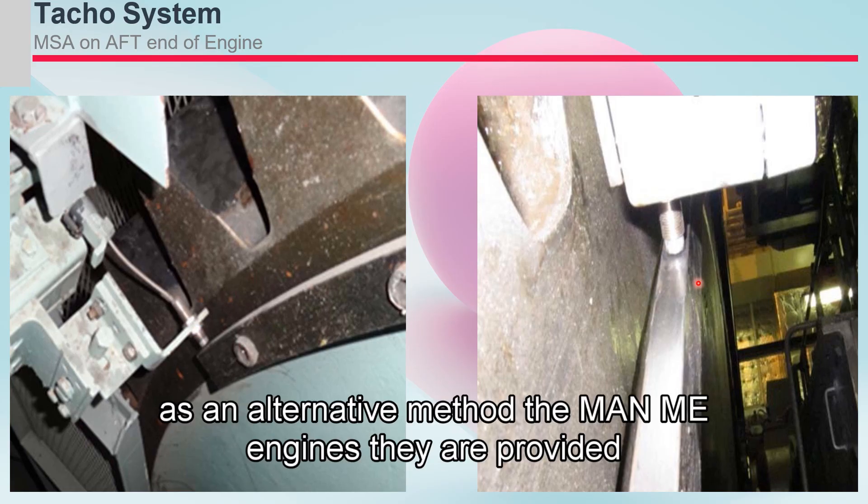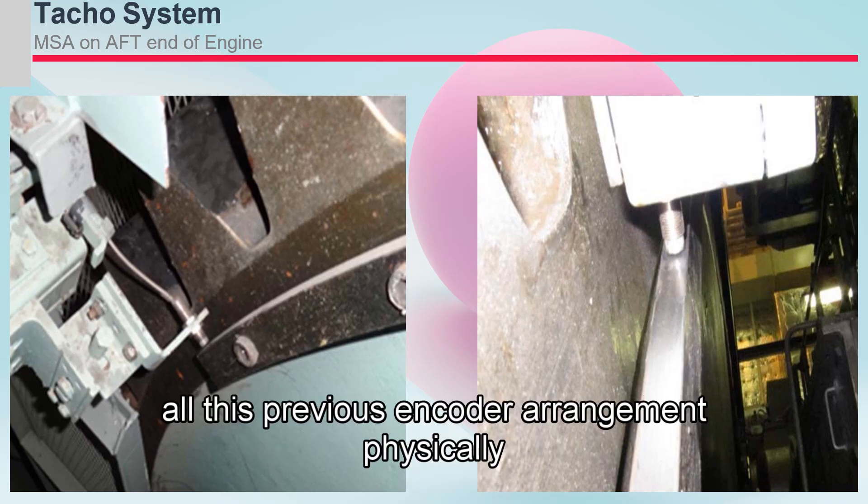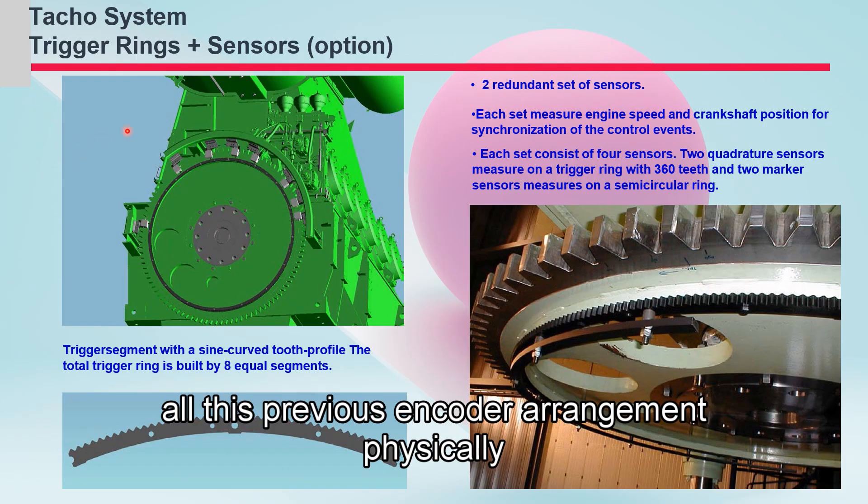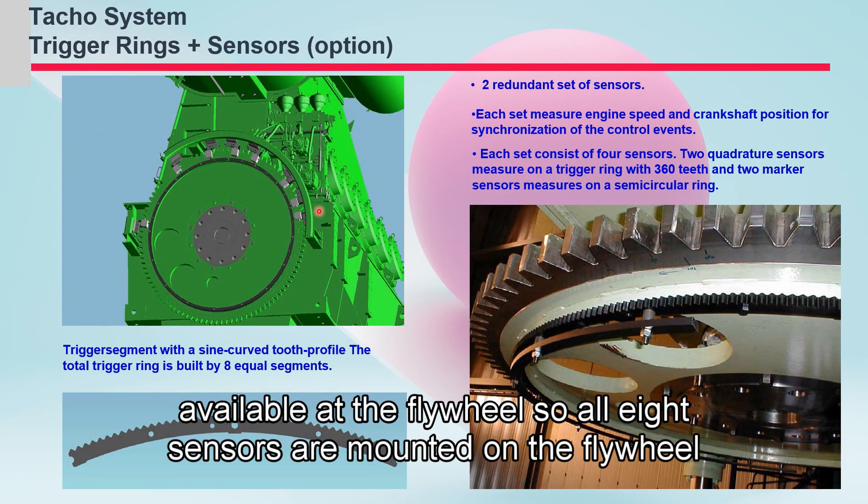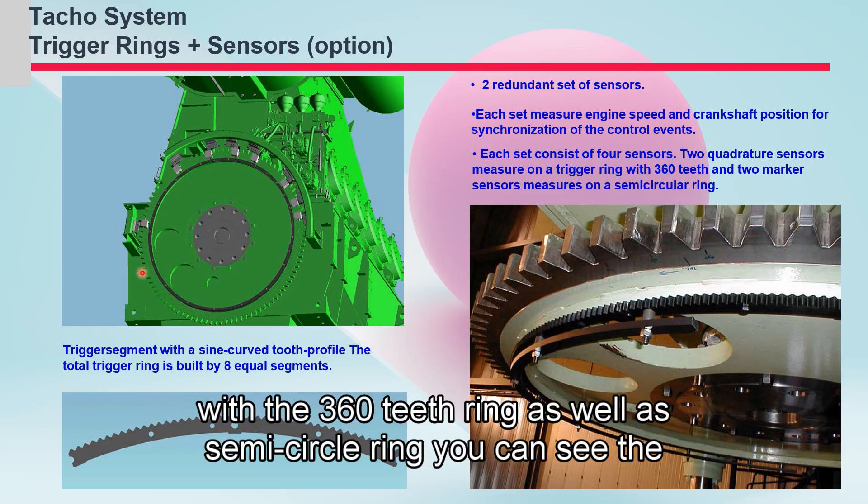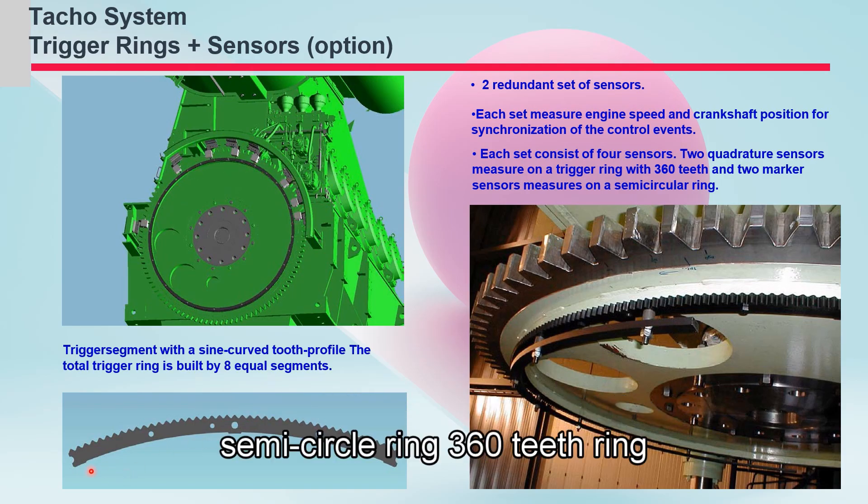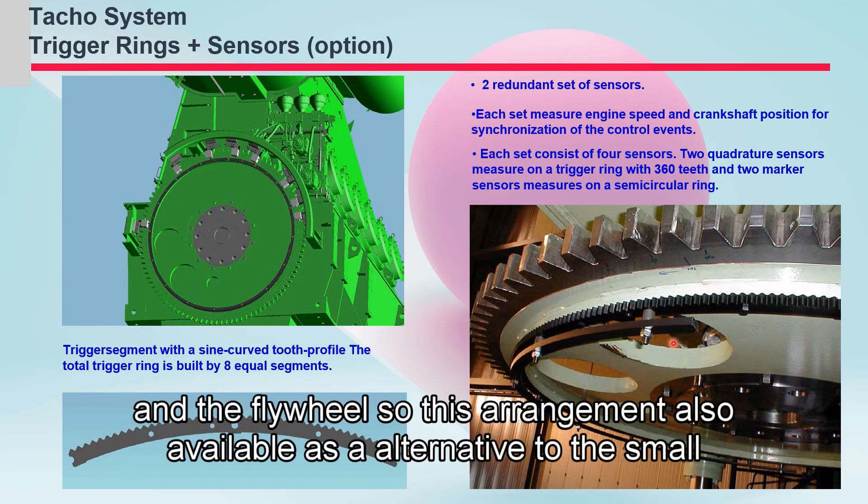As an alternative method, the MAN ME engines are provided with all the previous encoder arrangement physically available at the flywheel. So all eight sensors are mounted on the flywheel with the 360 teeth ring. As opposed to semicircle ring, you can see the semicircle ring, 360 teeth ring, and the flywheel. So this arrangement is also available as an alternative to the small tiny angle encoders.